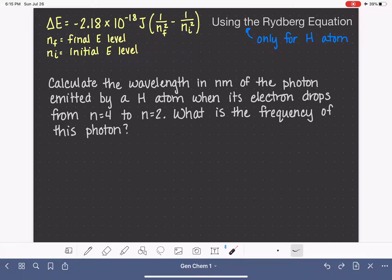Let's do an example of using the Rydberg equation. In this problem, we're being asked to calculate the wavelength in nanometers of the photon that's emitted by a hydrogen atom when its electron drops from n equals 4 to n equals 2. So in general, anytime you're being asked to calculate anything and it tells you it's a hydrogen atom, the only option that you have is using the Rydberg equation.